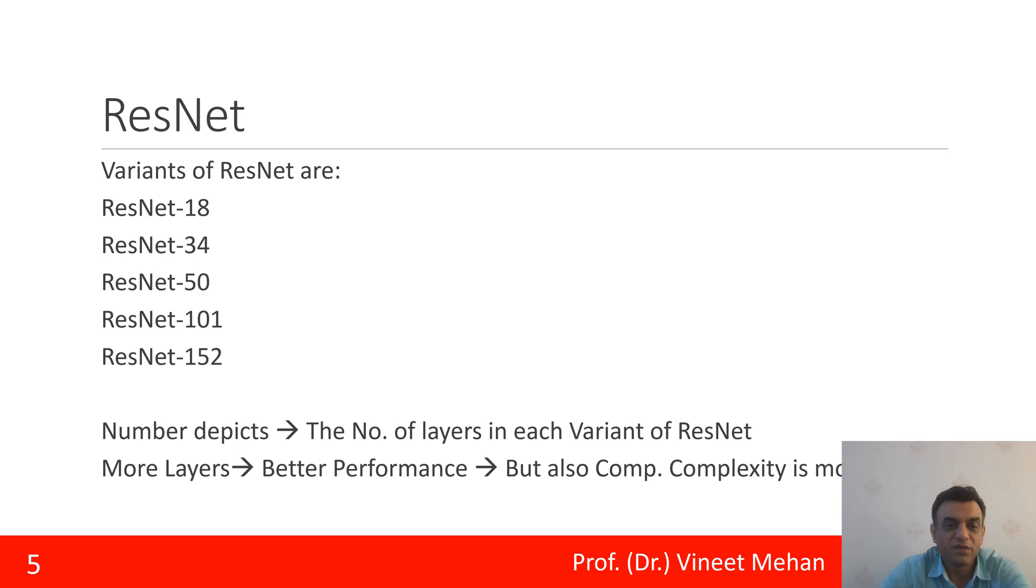There are a number of variants of ResNet: ResNet 18, 34, ResNet 50, ResNet 101, and ResNet 152. These numbers at the end—18, 34, 50, 101, and 152—depict the number of layers in each variant of ResNet. As we enhance the number of layers, better is the performance, but at the same time computational complexity is also more.